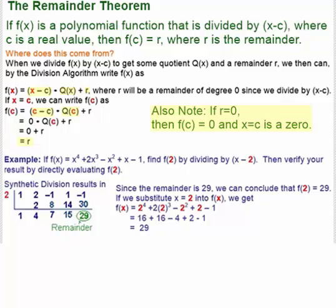So we do the synthetic division here. We put 2 off to the left. And then all the coefficients of our polynomial. 1, 2, negative 1, 1, and negative 1. And we do that synthetic division.